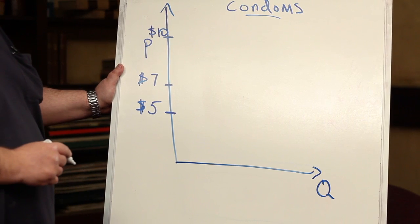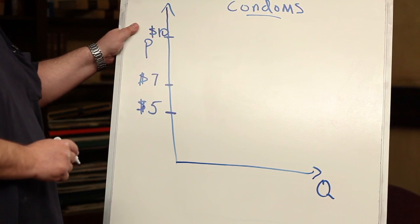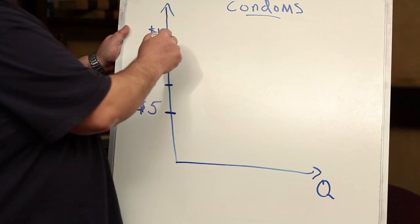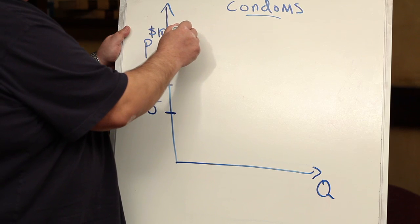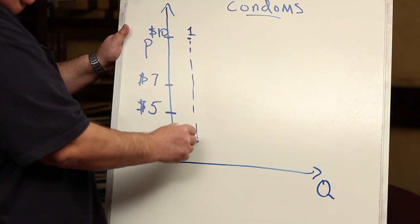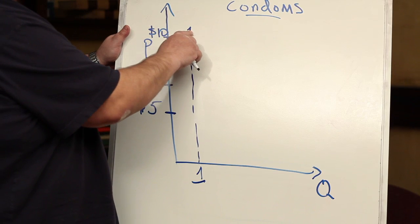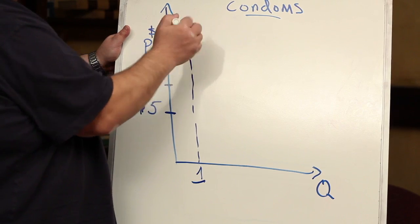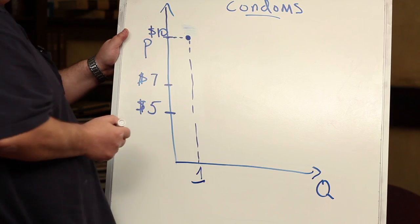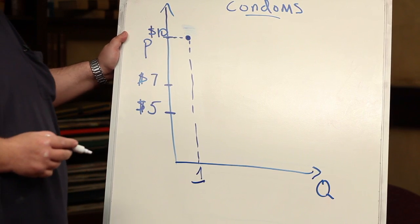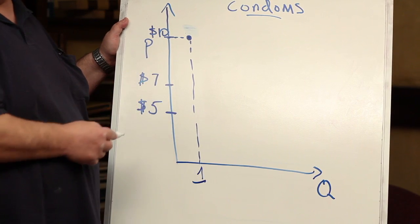Let's look at the quantity demanded on the graph in the case of each price. When the price was ten dollars, we said that the quantity demanded would only be one. So this is where I'll write one, and that means I don't need it here anymore. And now I'll just go right across. And this point here represents the quantity demanded of one pack of condoms when the price is ten dollars.